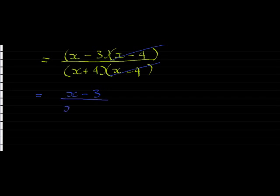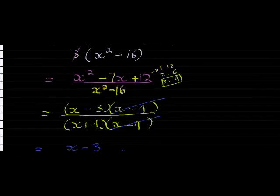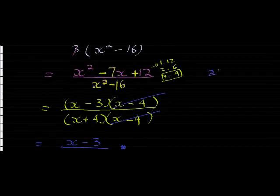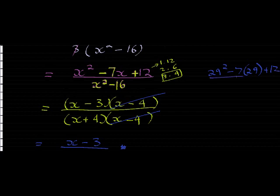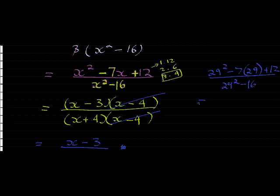Okay, so I have got 29 squared minus 7 times 29 plus 12 over 29 squared minus 16. Either way, again I'm just doing this to illustrate it. You never have to do this, but it is a good way of just checking your answer.